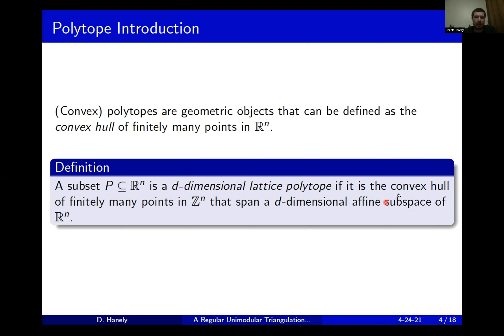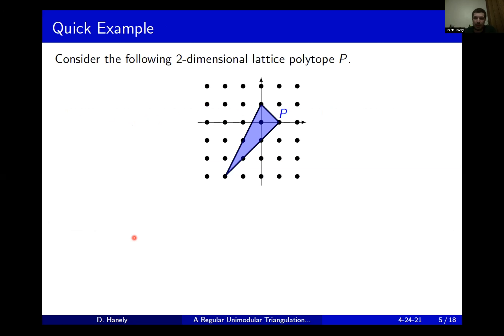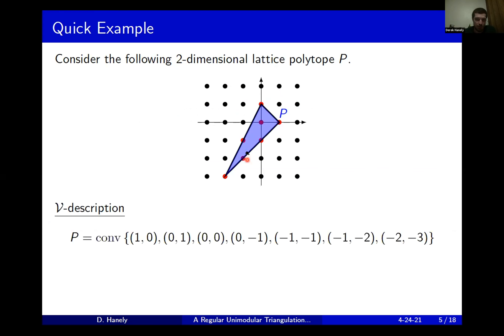A lattice polytope can be thought of as the convex hull of a finite number of points in the integer lattice contained inside that Euclidean space. Let's see an example in R2. Here we have a triangle in R2, and we're taking all the points inside of it. This is defining a two-dimensional lattice polytope. One means by which we could describe it would be the convex hull of all of these red dots — essentially taking the smallest convex set that contains all of those points.